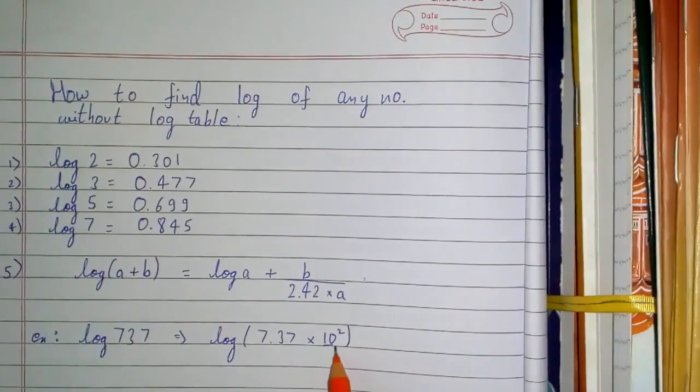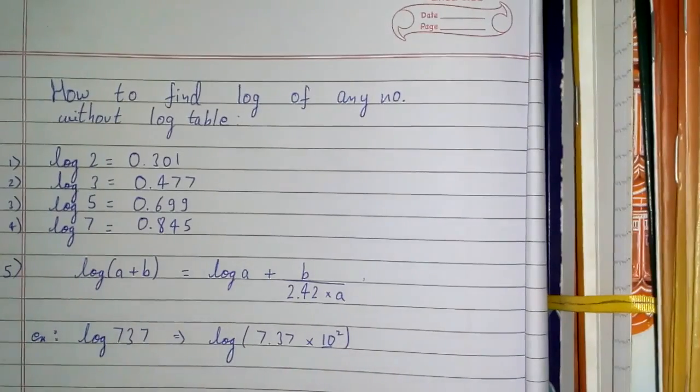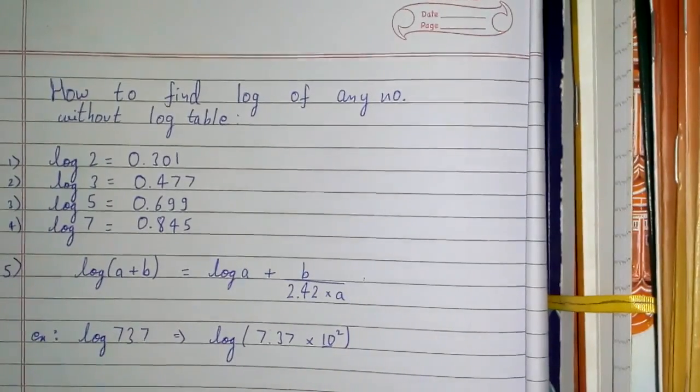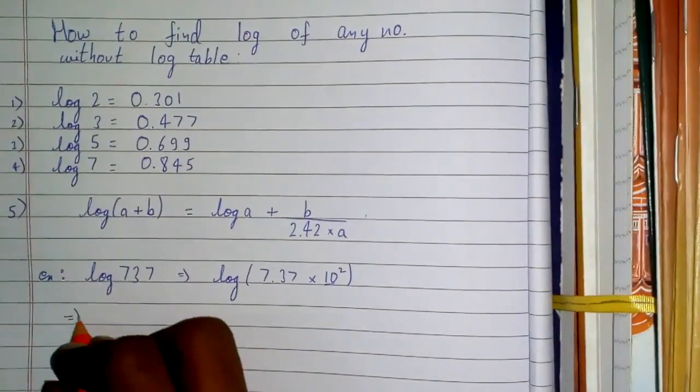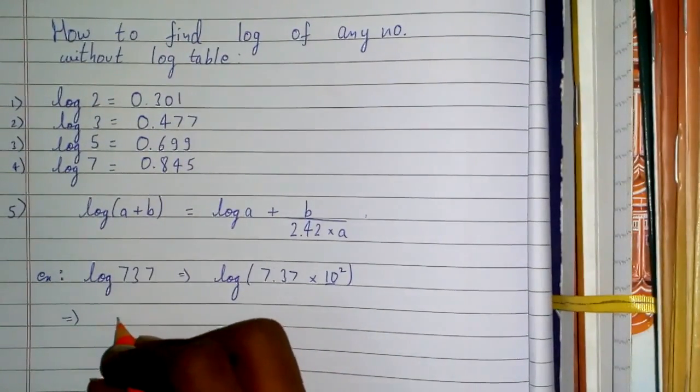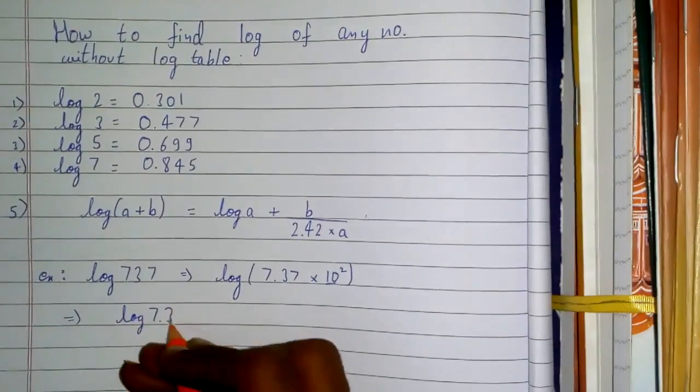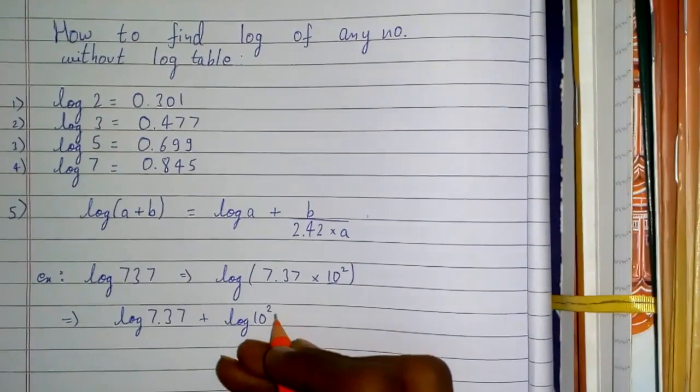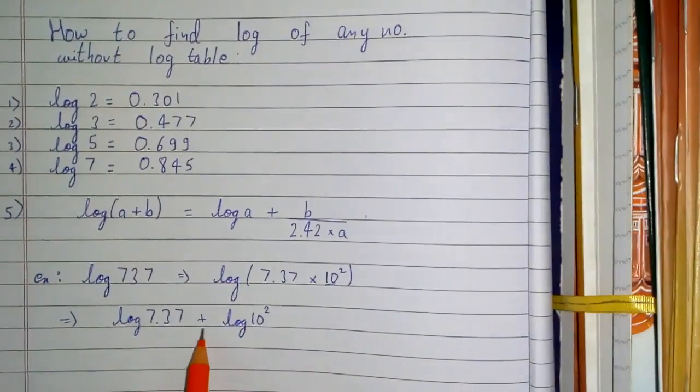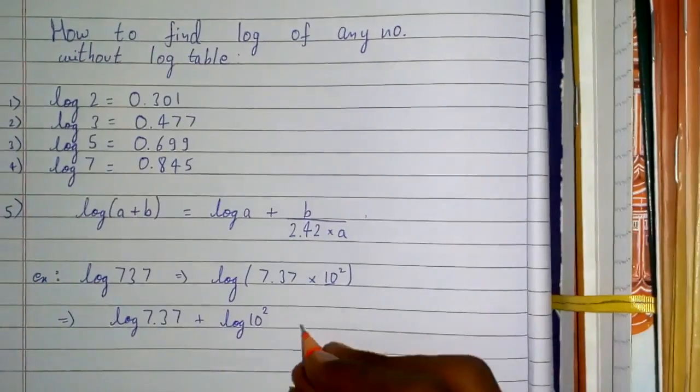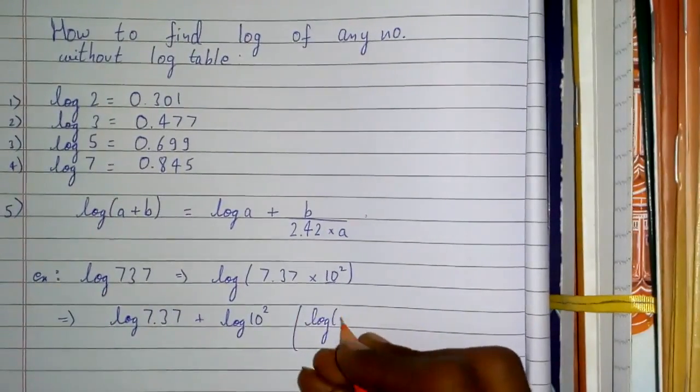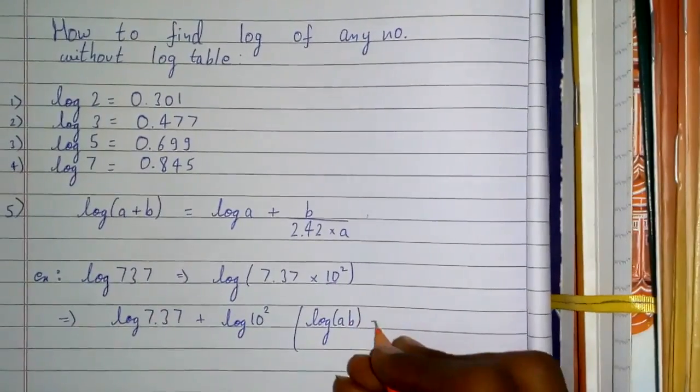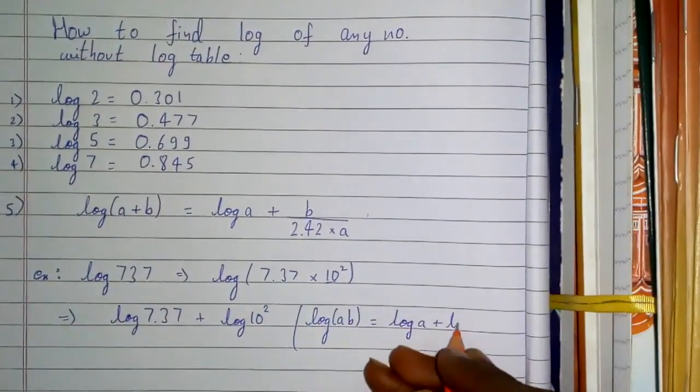We do this because using the property of log, we can bring this 2 down, and log base 10 of 10² becomes 2, making it easier to solve. So we'll simplify it. I've added here because log(a×b) = log a + log b.